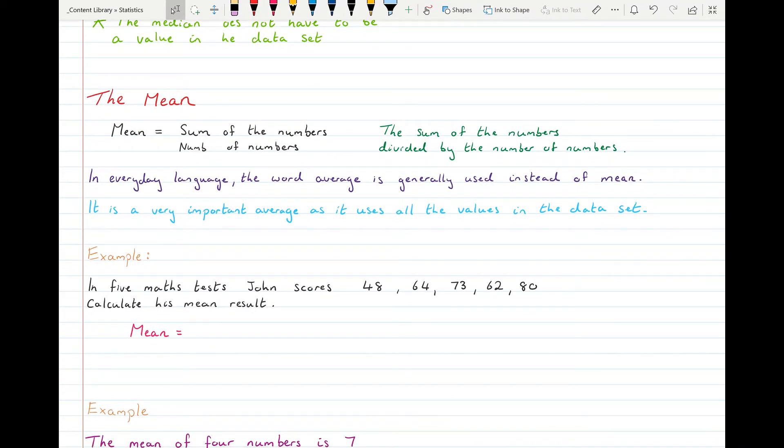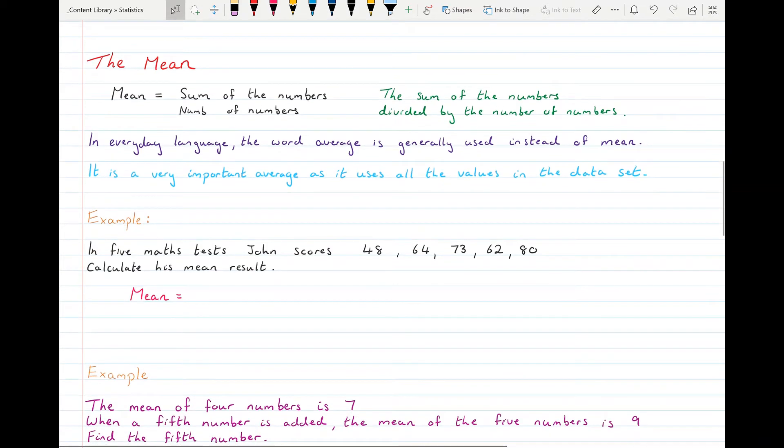In five maths tests, John scored 48, 64, 73, 62 and 80. Calculate his mean result. So we'll add them all up together. And then we will divide by however many numbers we're adding. So we're adding together one, two, three, four, five. We're adding together five numbers.